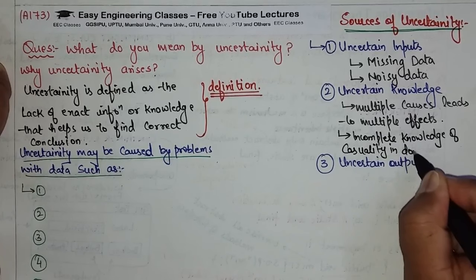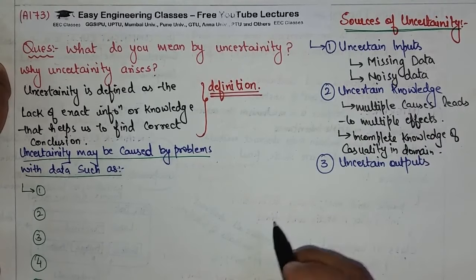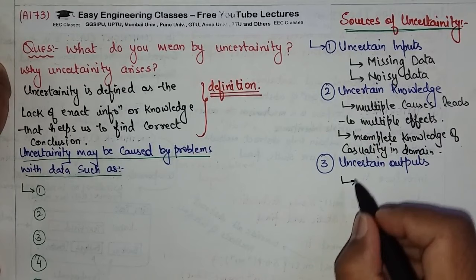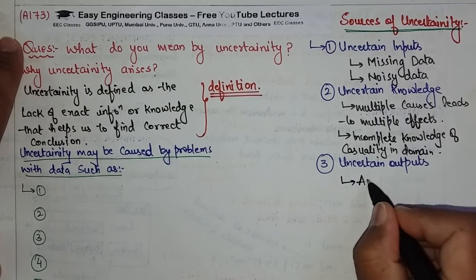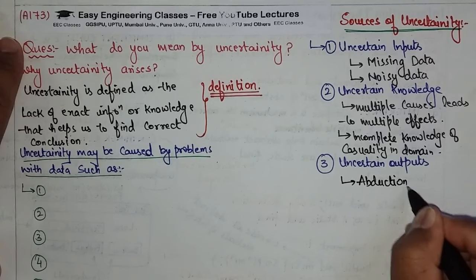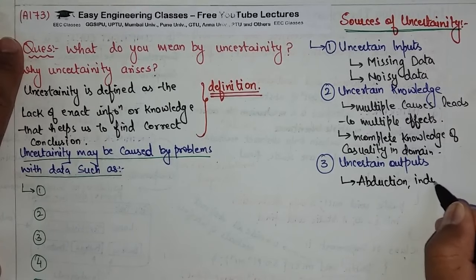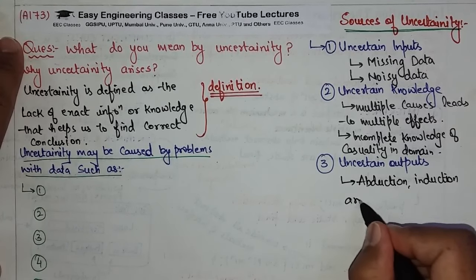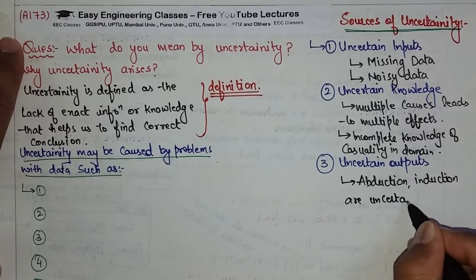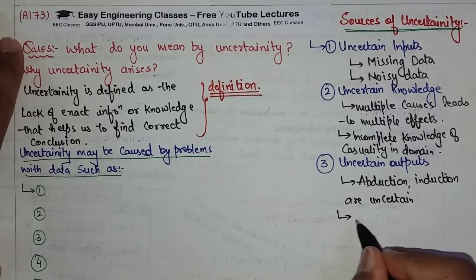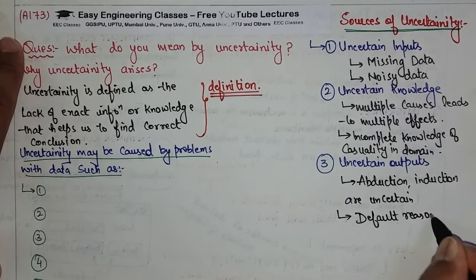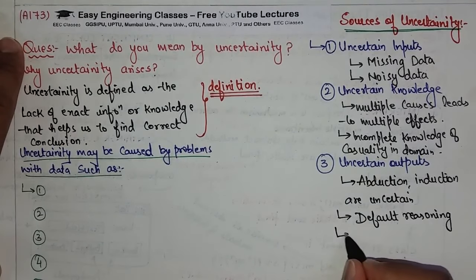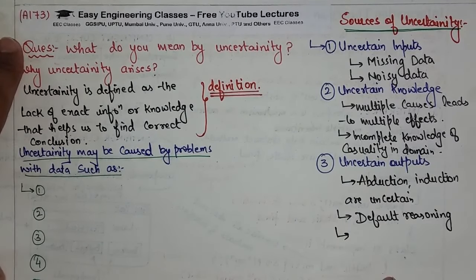Then uncertain outputs: abduction and induction are inherently uncertain. Default reasoning is also uncertain, and incomplete deduction or inference can be uncertain.